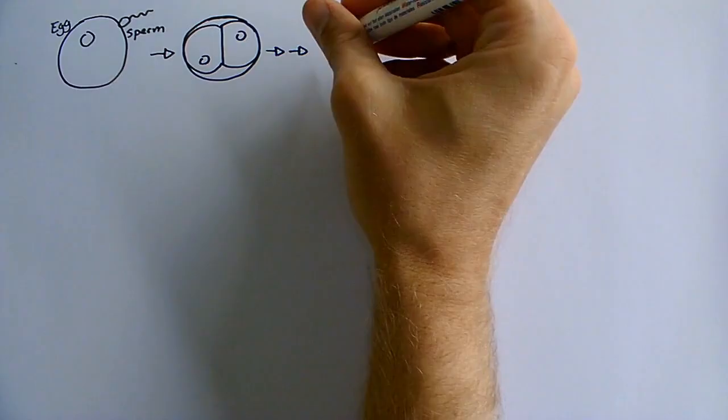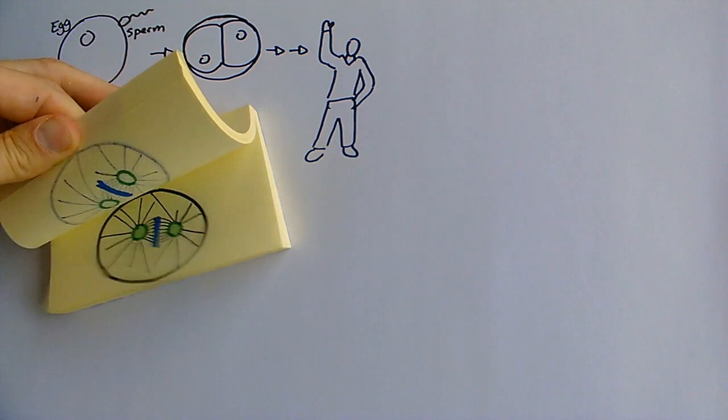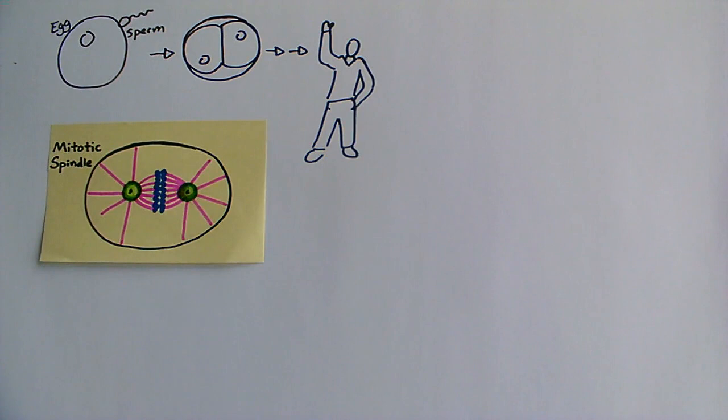As we grow and develop, the cells in our body divide to make new cells. During each division, cells make a copy of their DNA and then build a structure called the mitotic spindle to make sure each new cell gets exactly one DNA copy.